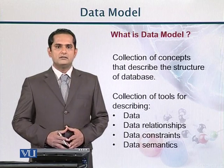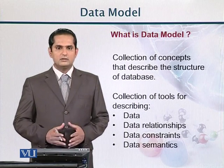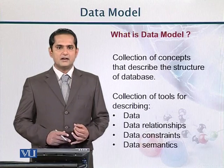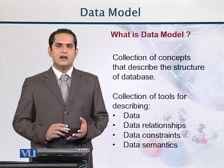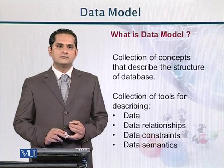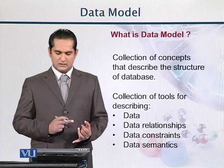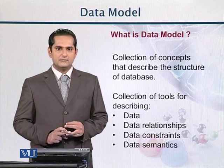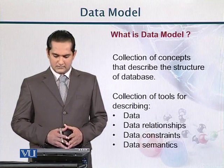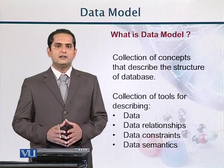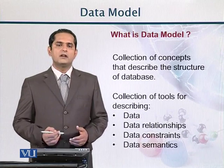So what we conclude from here is that basically a data model is a collection of tools which describe what is data, what is the relationship between data, what are the constraints, and what is data semantics. These things — data, data representation, data constraints, and data relationships — are basic things which were also part of DBMS systems. Data semantics, which is related to the meaning of data, is a new part of the data modeling dimension.